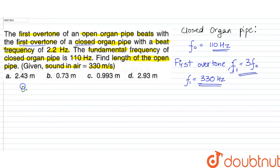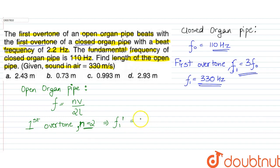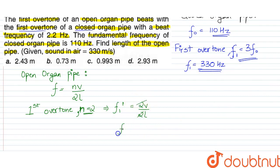Now let's see the frequency of the open organ pipe, which is n times v upon two times l. For the first overtone, n equals 2 because it is the second harmonic. So F1-dash will be equal to 2v upon 2l, and after cancellation, F1-dash equals v by l.